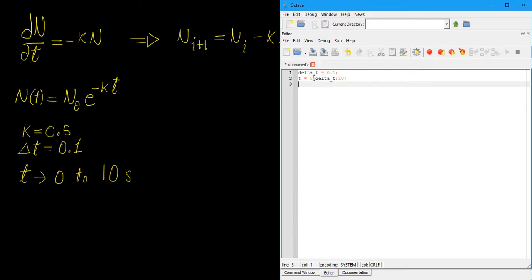So basically what this means is this is going to create a vector of equal space values between 0 and 10, and the spacing between those points is going to be your delta t, which is 0.1. And now the next thing is going to be our k value, which is 0.5.